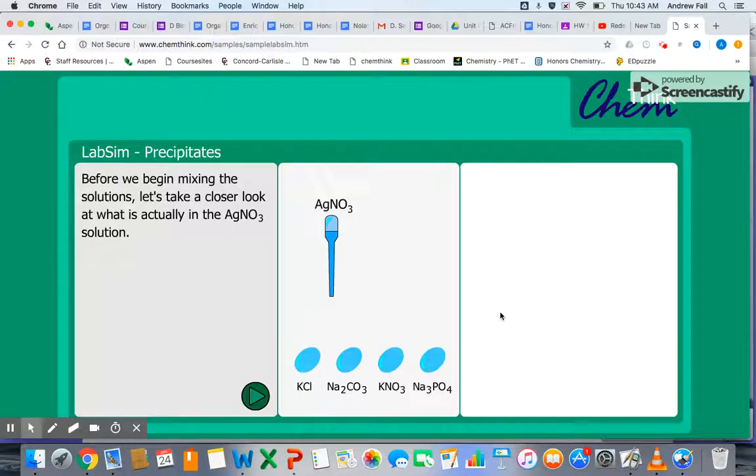In this video we're going to talk about net ionic equations with respect to double replacement reactions. When we have a double replacement reaction, typically what we're doing is we're mixing two solutions together and then we're getting some product that's either a precipitate or a pure liquid or a gas being evolved.